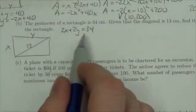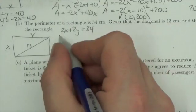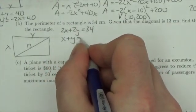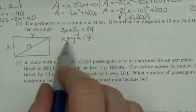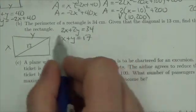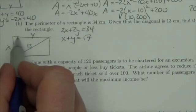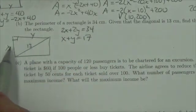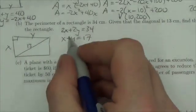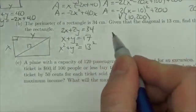I'm not particularly fond of that. That could be simpler. So I'm going to divide everything through by 2 and I like that better because the coefficients are both 1 here. So that's one equation. The other one will be the Pythagorean Theorem relating the two sides of the rectangle to the diagonal. So x squared plus y squared will equal 13 squared.